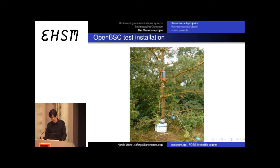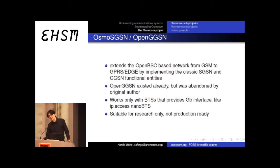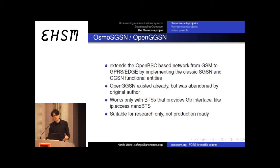This is a picture of the first test installation in an outdoor environment. You can see some base stations at the bottom of a tree, cables going up, and two patch antennas mounted with red tape. We expanded into GPRS and EDGE functionality by implementing SGSN and GGSN network entities. With certain base station types, we can now have packet data communications, though this is still experimental unlike the GSM side which is production ready.